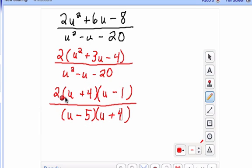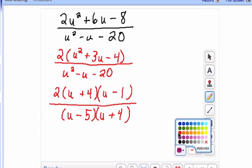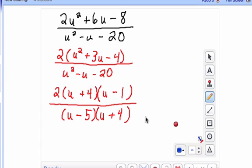So once you've factored them, then you're going to look for factors that are exactly the same. So we have a u plus 4 and a u plus 4, and we're basically simplifying those to 1s.